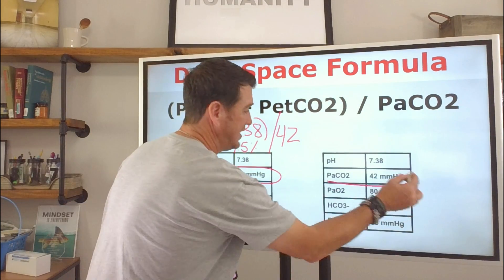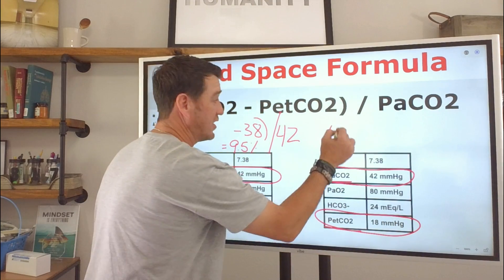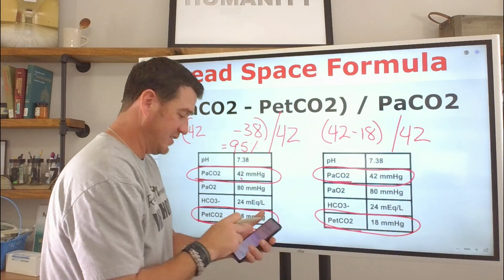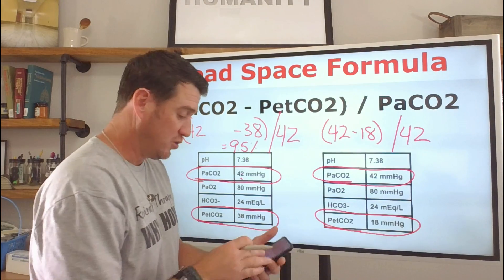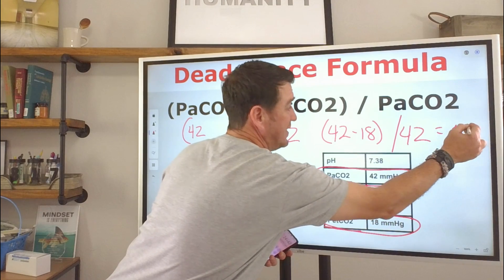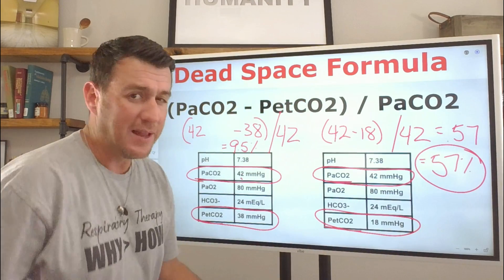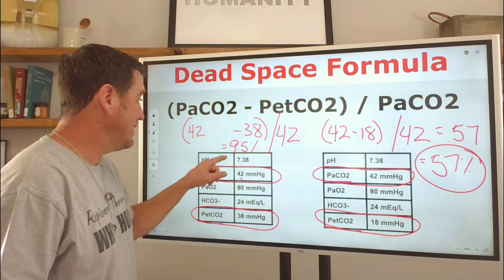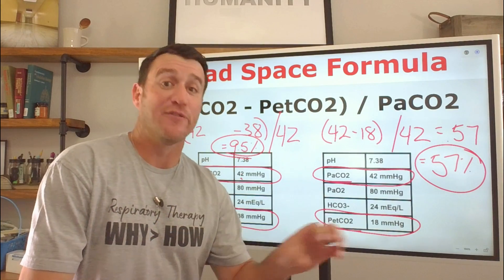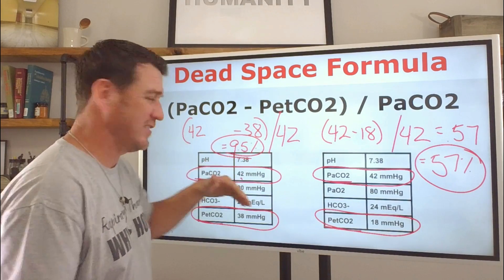So what we see here is that here we get 9.5%. Now, when you do this, you're going to get 0.095, but then you multiply that times 100 to get it into a percentage. So 9.5%. Now, when we look at this example over here, we see we got 42 and our end tidal CO2 is 18. So now we see we're going to go 42 minus 18 divided by 42.